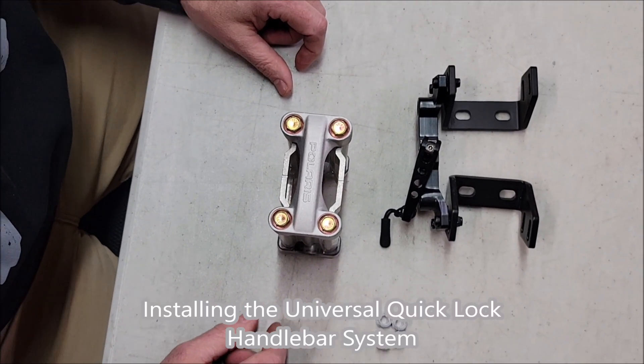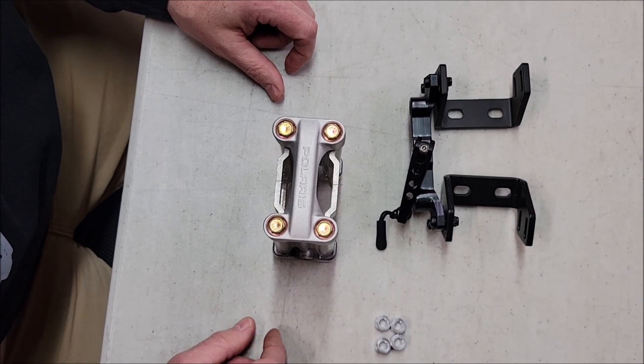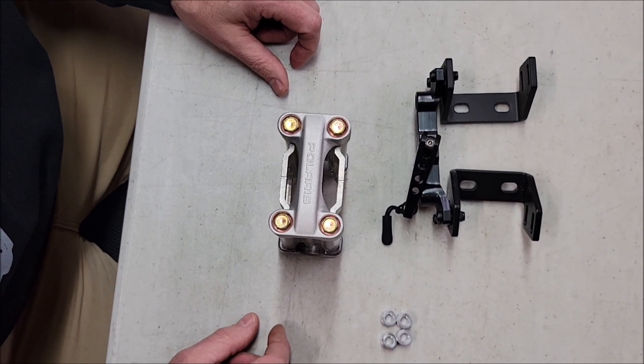Today we're going to do a little tutorial on installing the Quick Clock Universal kit. First we're going to start with the Polaris Matrix.